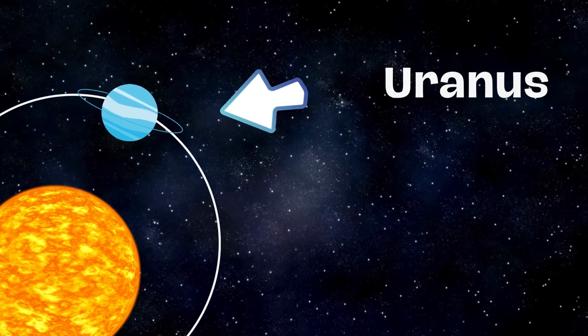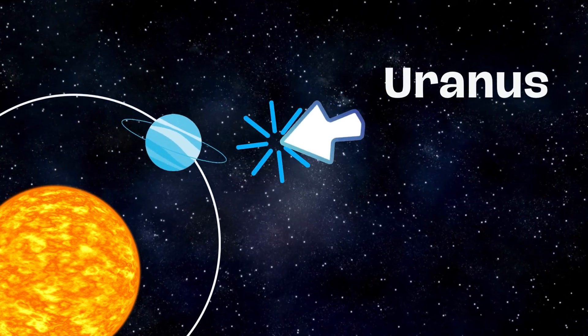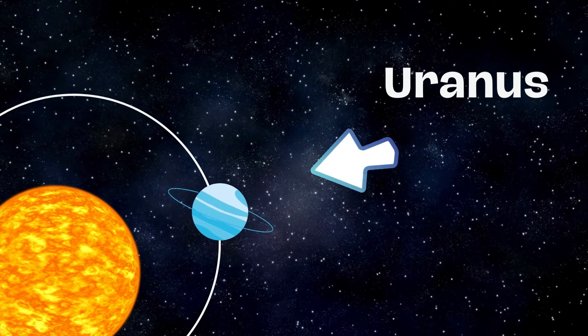Uranus is tilted on its side, so it rolls through space in a unique way.